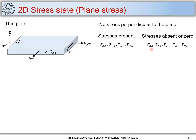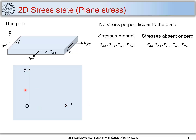Now let us take an element from this plate and see the stress state in that element. I mark the coordinate axes x and y, and I would like to find the state of stress at point O. I mark the stress components: σxx acting on the x-plane along x, σyy acting on the y-plane, and shear stresses τyx and τxy — τyx acting on the y-plane along x, and τxy on the x-plane along y.